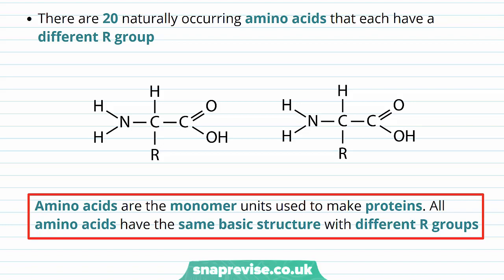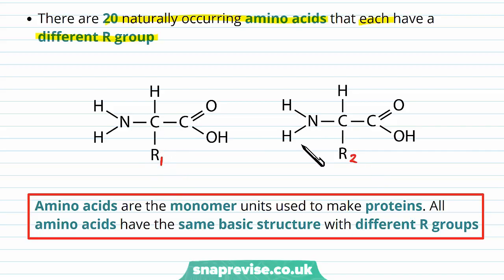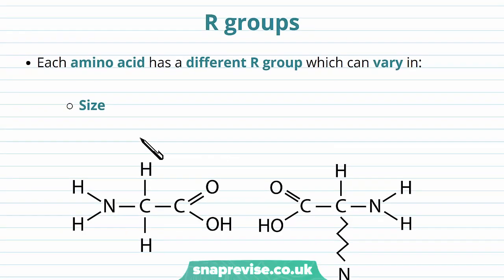In life there are 20 naturally occurring amino acids, and each of them has a different R group. The only thing that varies between these 20 types is the R group — they have exactly the same structure everywhere apart from the R groups. So all amino acids are the monomer units to make proteins, and all amino acids have the same basic structure but with different R groups, which can vary in their different properties.